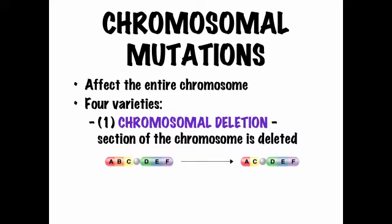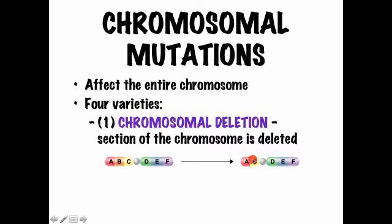The first is called chromosomal deletion — be careful not to confuse this with gene deletion. This is where either an entire chromosome or just a small part of a chromosome is deleted. For example, a chromosome with genes A, B, C, D, E, F — if B is deleted, the body still assumes that spot is occupied by B, so it uses C instead of B, and D is treated as C, and so on. The entire chromosome's function is disrupted.